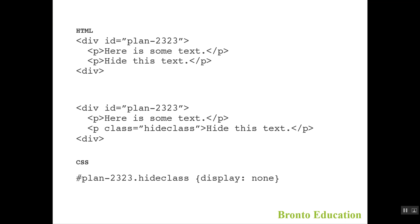Here in the HTML, we have a div with id of plan2323 and two paragraphs — one with the text 'here is some text' and another with 'hide this text'. We want to change only that second paragraph, so we give it a class named 'hard-class'. When we come to the CSS, we use dot for class and hash for ID. Setting display: none on the hard-class means that element should not be displayed — so that text will be hidden.